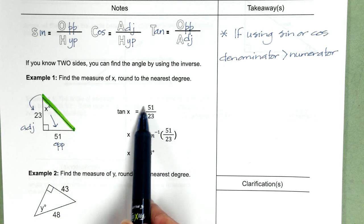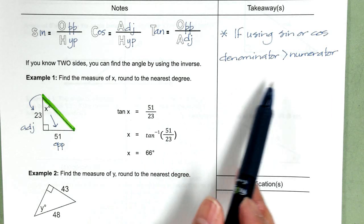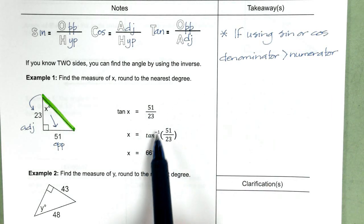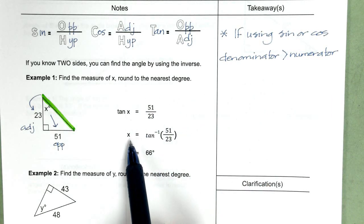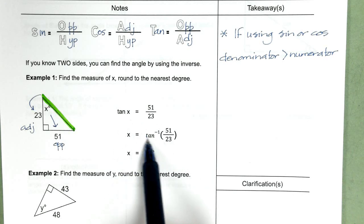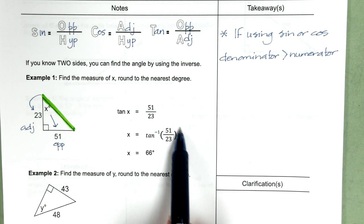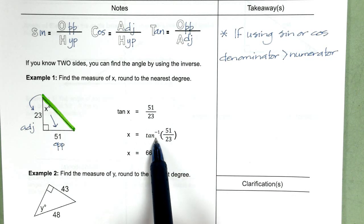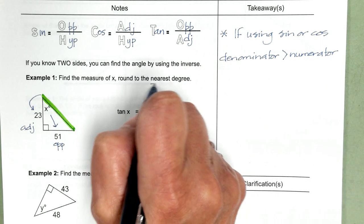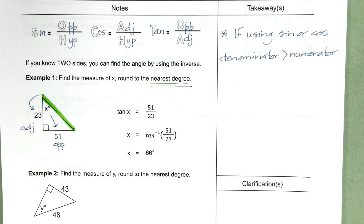Now with tangent, you don't have to worry about the denominator being greater than the numerator. So we're good here. Then in your calculator, the inverse of tangent is tangent to the negative one. And this is what you're going to put in your calculator. And you can find your inverse tangent button on your calculator. And when you plug that in there, rounding to the nearest degree, you get 66 degrees.